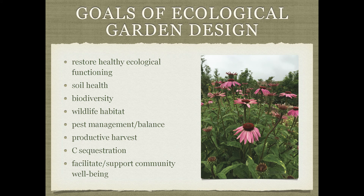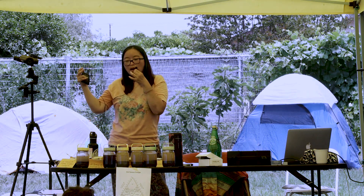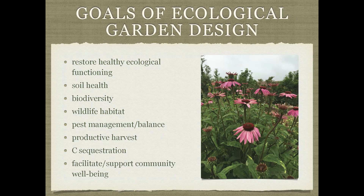Our goals for ecological garden design are to restore healthy ecosystem functioning — including soil health — and to restore and cultivate biodiversity both below and above ground, cultivating wildlife habitat for insects, birds, other critters, and small mammals. One principle is sharing resources with wildlife; for example, growing an elderberry tree knowing you'll harvest some of it and some will go to the wildlife, because birds help eat insects and pests. So we integrate wildlife into our design.